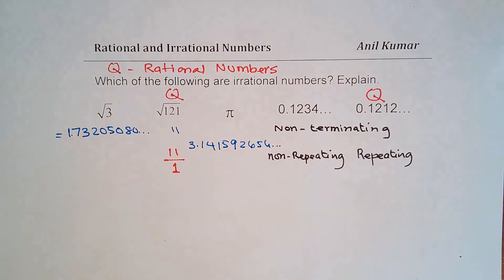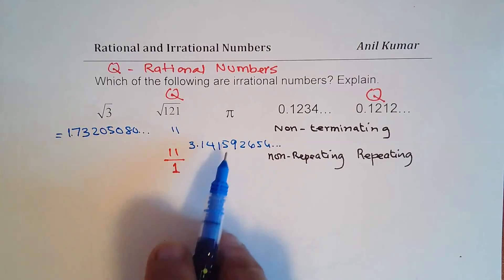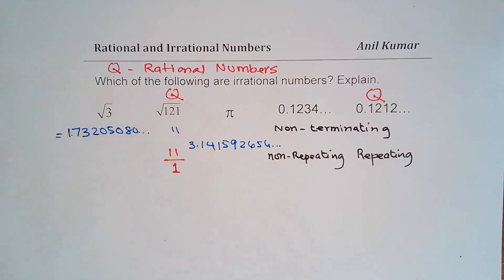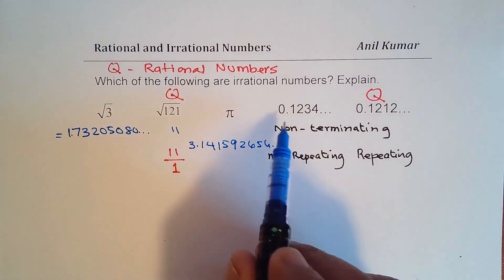So we really don't know how to write pi as a rational number. And therefore, it is again an irrational number, right?